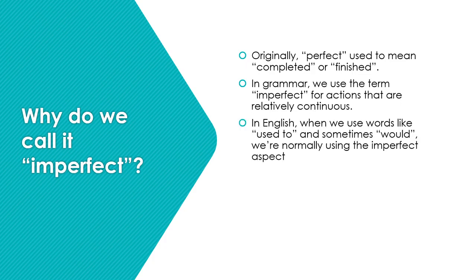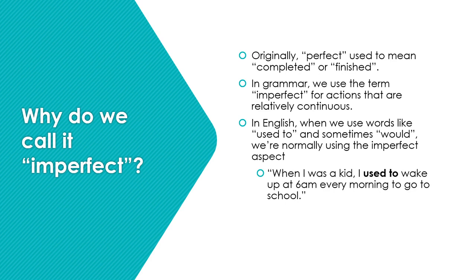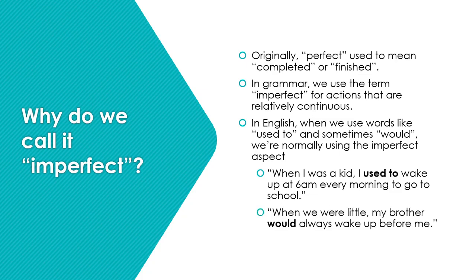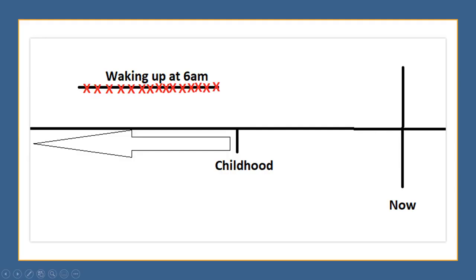In English, when we use words like 'used to' and sometimes 'would,' we're normally using the imperfect aspect. For example: 'When I was a kid, I used to wake up at 6 a.m. every morning to go to school.' Or another example: 'When we were little, my brother would always wake up before me.' These are things that happened several times over the past.